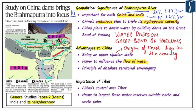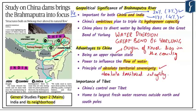Upper riparian states claim the principle of absolute territorial sovereignty, meaning the right to use river water unilaterally regardless of lower riparian concerns. Lower riparian states base their claim on absolute territorial integrity, which argues that upper riparian actions should not affect the water flowing downstream. These are two opposing principles in transboundary river disputes.